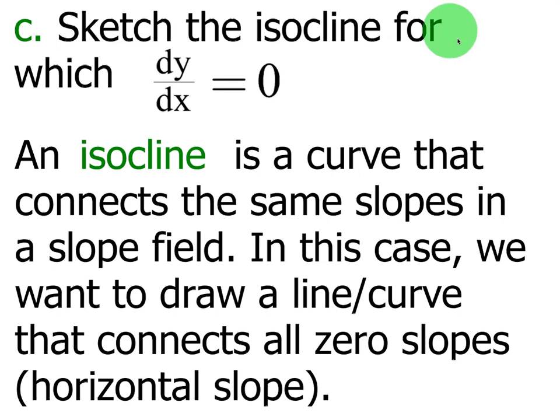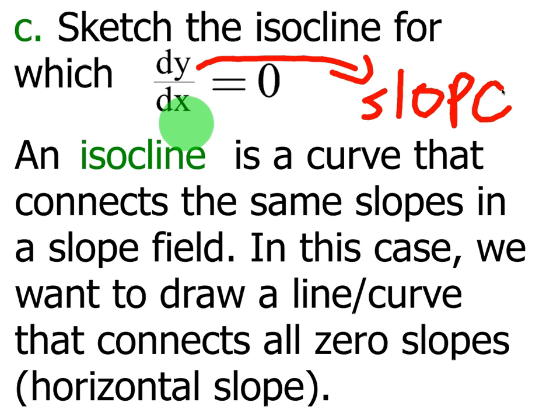Part C says to sketch an isocline for which dy/dx equals 0. So basically, right off the bat, what I'm going to explain is we want to sketch a line on our slope field so that all of the slopes, so that line crosses through all the slopes that have a slope of 0. So it's a line that connects all the slopes that equal 0 on our slope field. An isocline is a curve that connects the same slopes in a slope field.